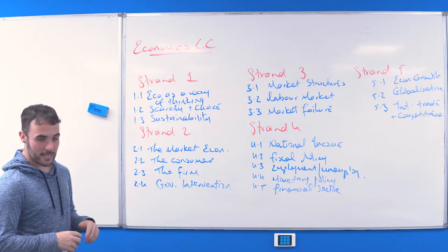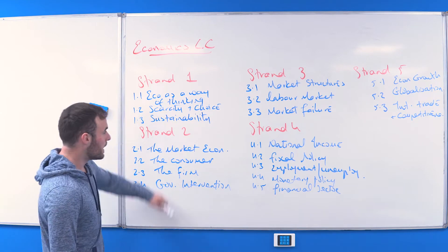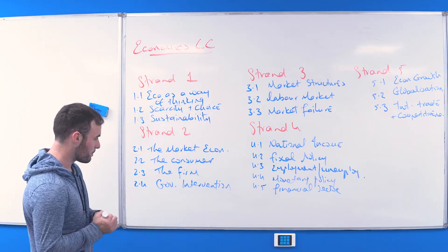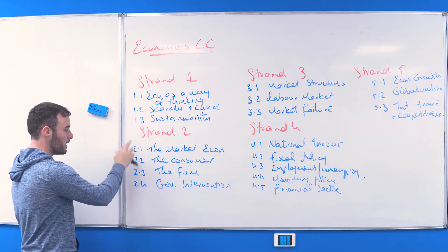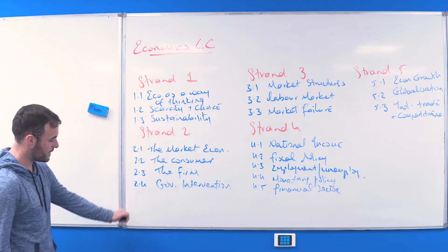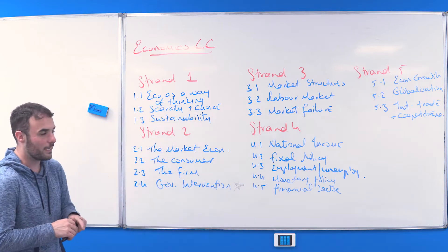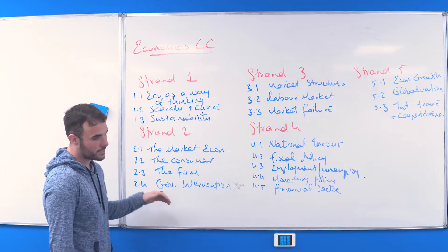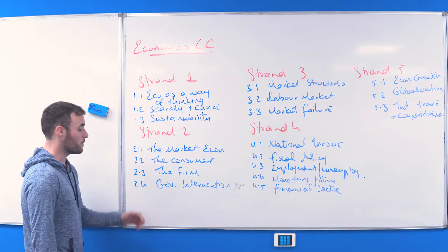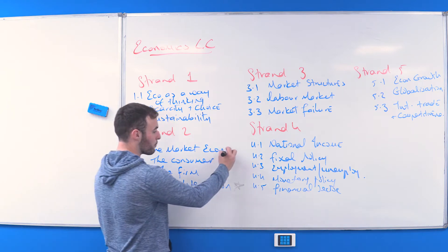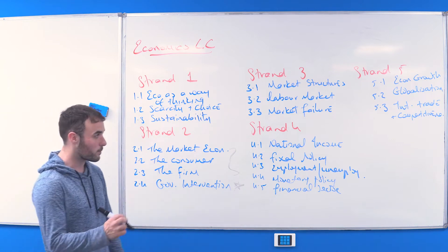At this stage in sixth year, I would hope you are bowling through macro. Generally you'll have micro ticked off — so you have your Strand One with sustainability done, demand, supply, elasticity, costs, and government intervention, which is a massive question. There are about 12-13 questions related to government regulation and intervention in the 2021 paper, so make sure you have that down. These are your bread and butter of economics.